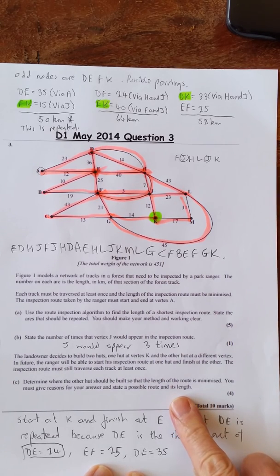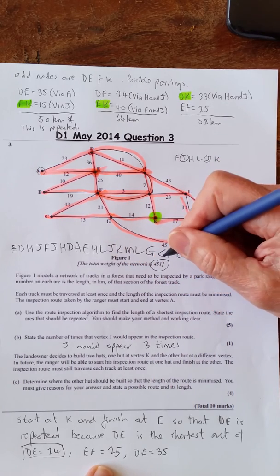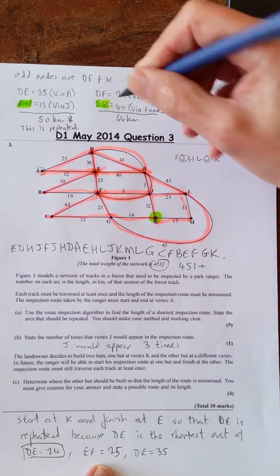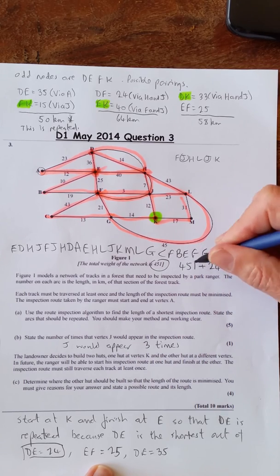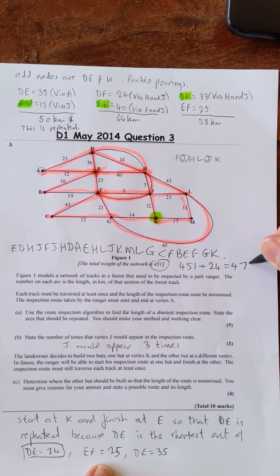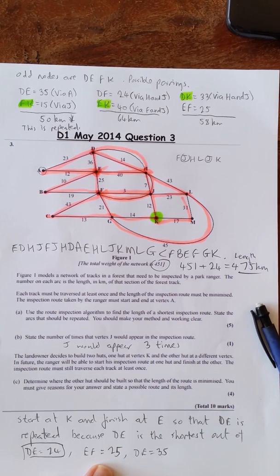Now it says state its length. It tells you in the question that the weight of the network is 451. So the weight of the network is going to be 451 plus what we need to repeat is 24. So it's going to be 475 kilometers. That's the length. And that's done.